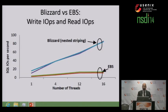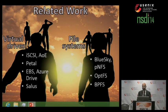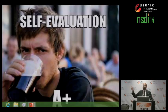We also ran an unmodified SQL Server on both Blizzard and Amazon Elastic Block Store using the same number of backing physical disks, and saw that Blizzard provides much higher IO rates for both reads and writes across various numbers of SQL threads. Due to time constraints, I'll elide a discussion of related work — but according to my own self-evaluation, I give Blizzard an A+, because in the end, what really matters is whether you love yourself.